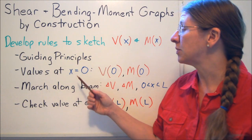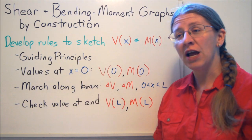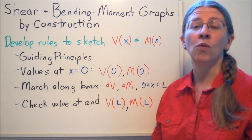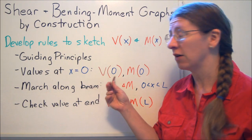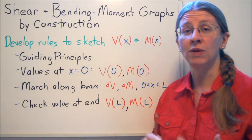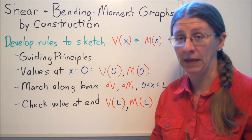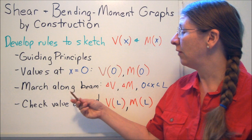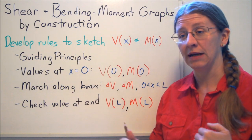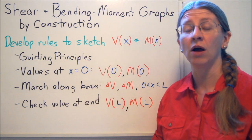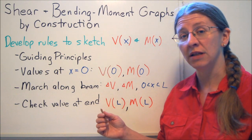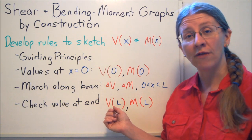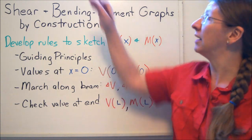So we'll look at the guiding principles. The general idea here is that we're going to find out where our internal loads V and M start at X equals zero, so what's happening at the left-hand side of our beam. And then if we can march along the beam and say how V and M are going to change as we go along, we can sketch that whole graph. And you've got to remember to check the values at the end because wherever your graph ends up, that needs to be at V of L and M of L.